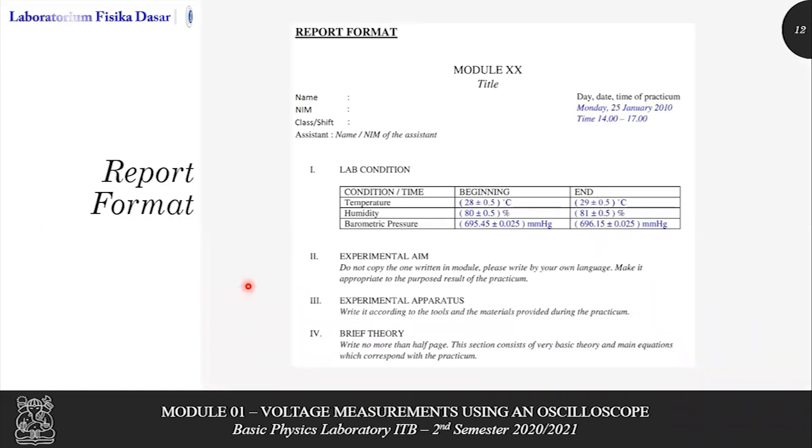And the very last, the report form. From the report, you need to write the date and the time of practicum. And then don't forget your name, your ID number, your class, and your partner's name and the ID number of your assistant. The lab conditions will be given. If not, you can use this example.